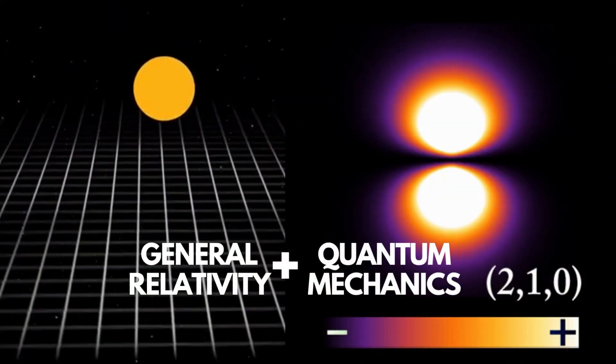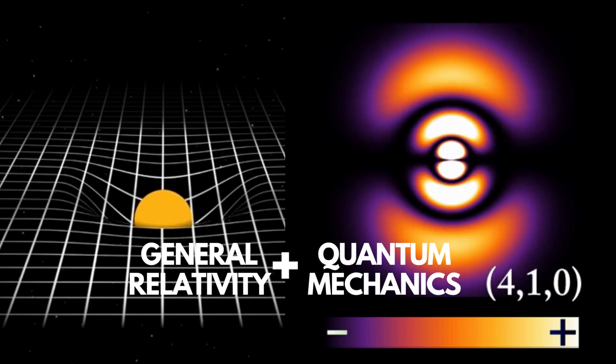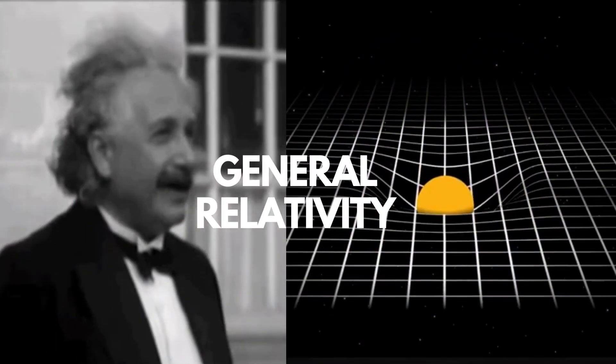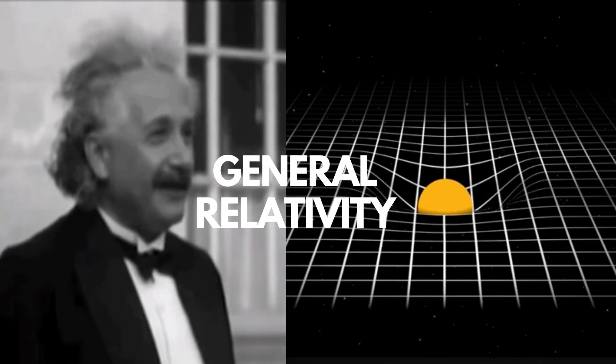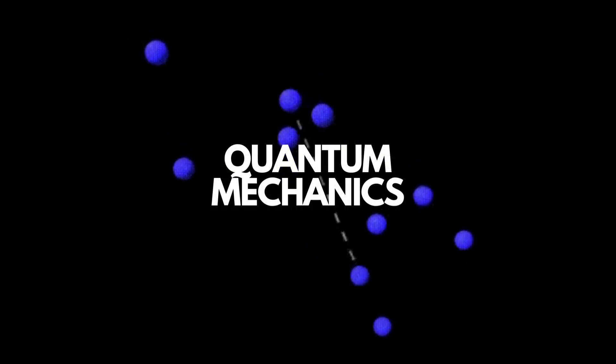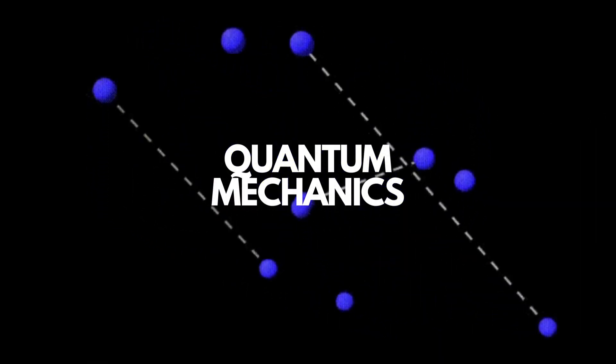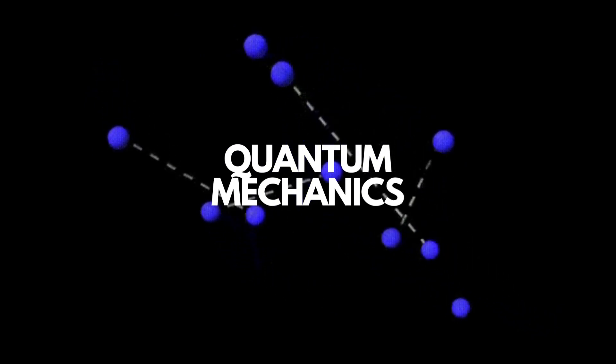Loop quantum gravity attempts to explain quantum gravity by combining general relativity with quantum mechanics. General relativity is Einstein's theory of space-time. Quantum mechanics, on the other hand, is a fundamental physical theory that explains how the universe works on a smaller scale than atoms.